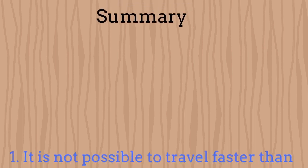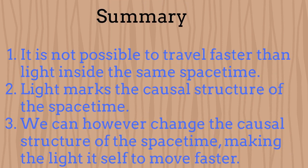In summary, it is not possible to travel faster than the light if we share the same space-time. The light itself marks the causal structure of the space-time. We can, however, change the causal structure of space-time for making the light to travel faster. If it could travel faster, then we could certainly move faster than the usual.